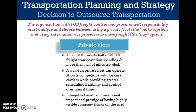The organization with FOB freight control and procurement responsibility must analyze the transportation make-or-buy decision. Firms must choose between transporting goods using a private fleet — the make option, which accounts for nearly half of all US freight transportation spending — or using external service providers to move freight, which is the buy option. Some firms have decided that external experts offer a variable cost, simplified, headache-free alternative to private transportation. By using for-hire carriers, customers do not have to incur large capital costs, invest time building transportation expertise, or take on the risks inherent in operating a private fleet.